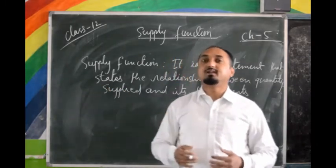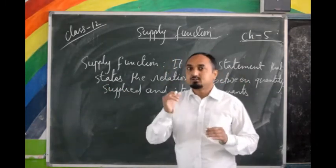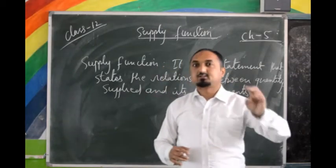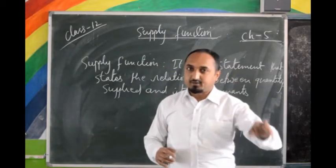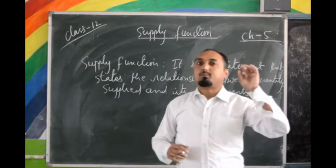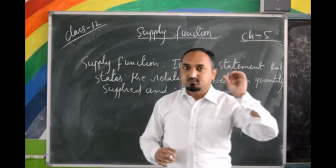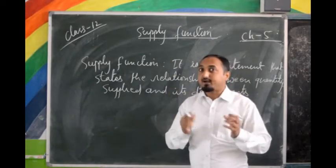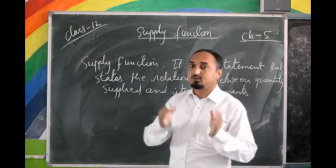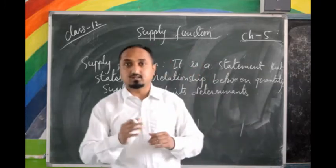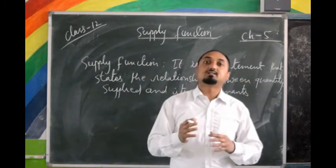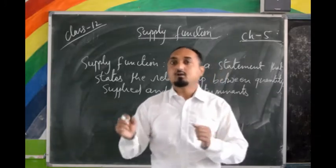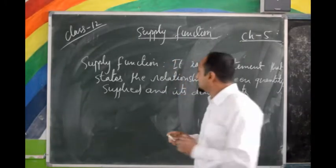What are the determinants of supply? The determinants of supply are: input prices, goals of the producers, price of the commodity, taxes and policy of the government, and so on. Various factors are there — various determinants that affect the supply of a commodity.